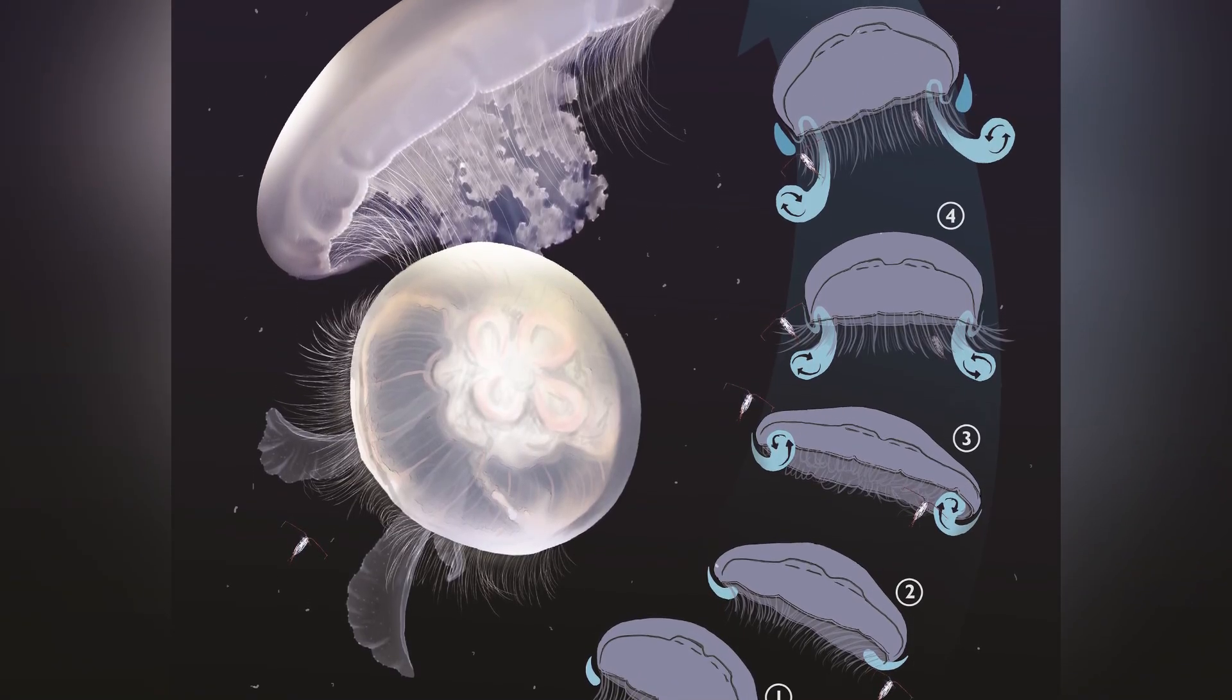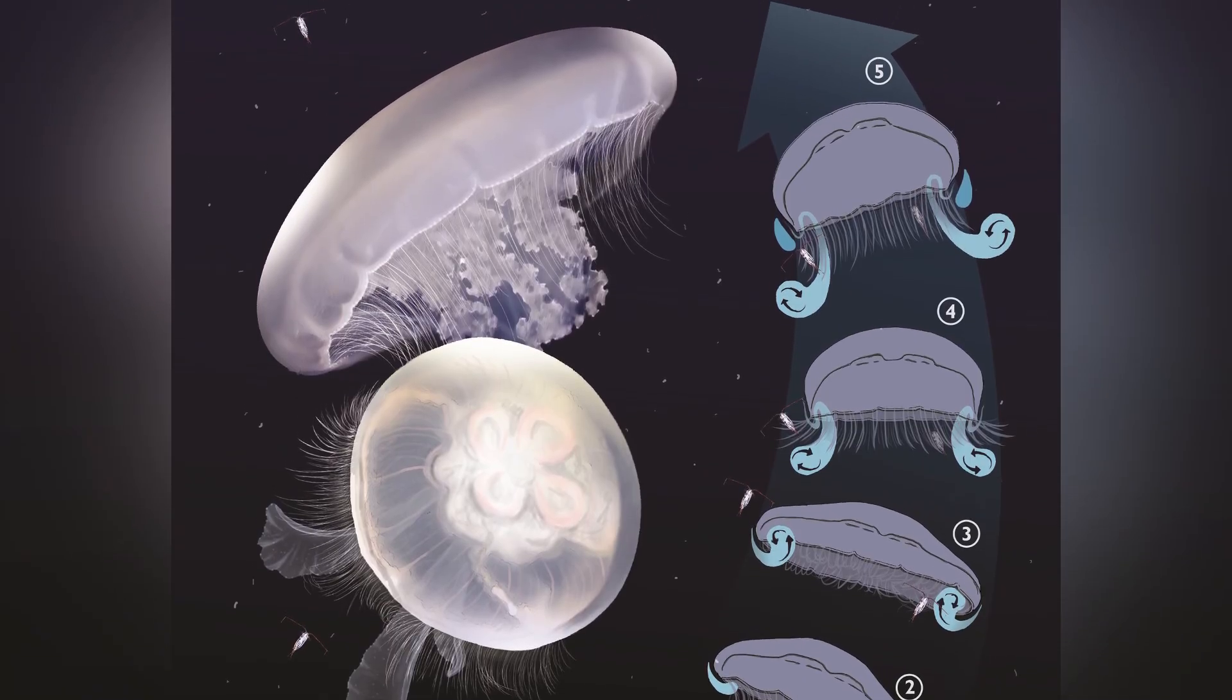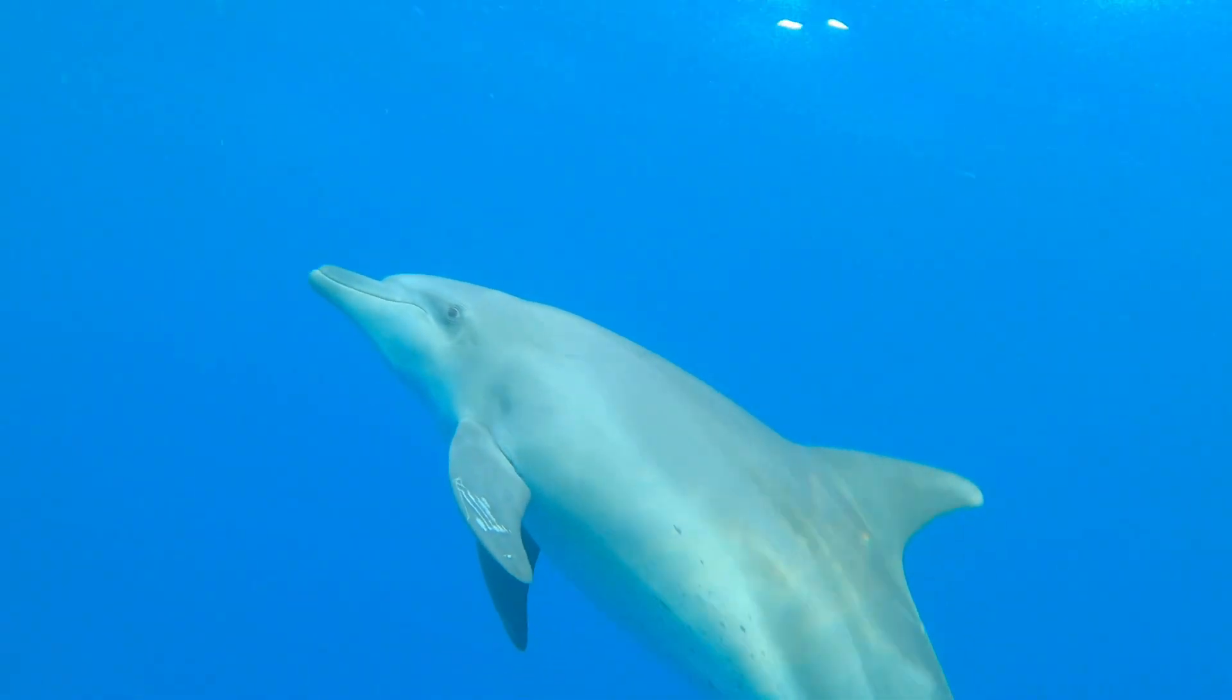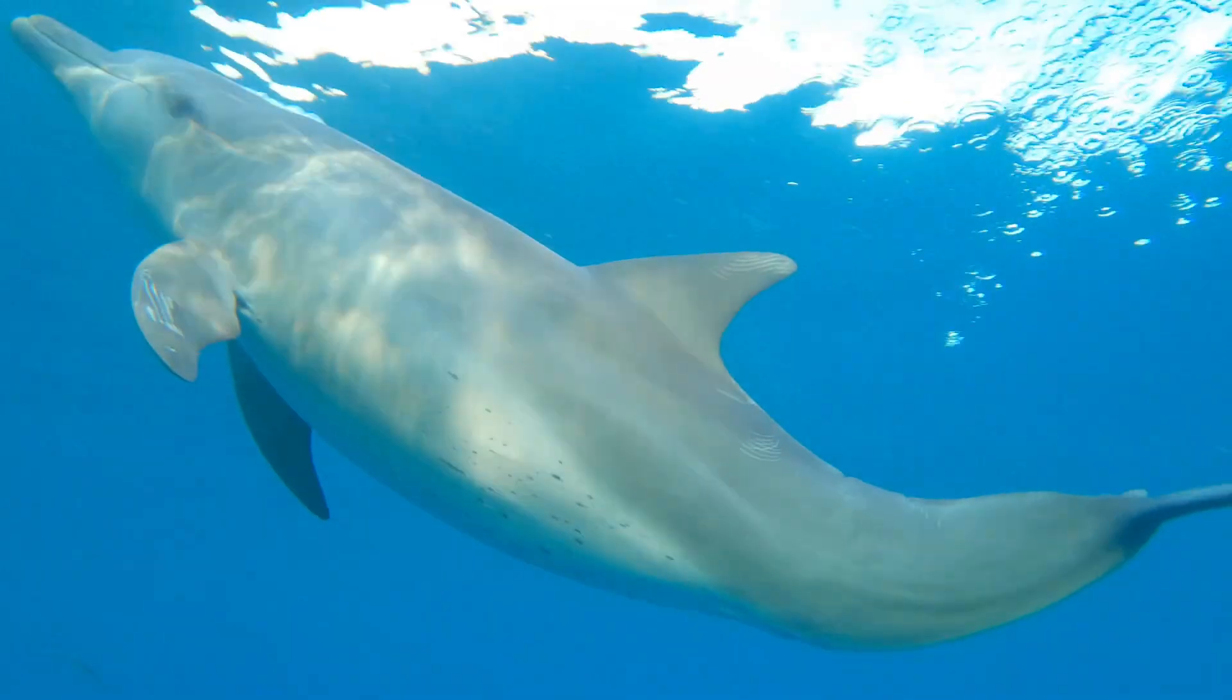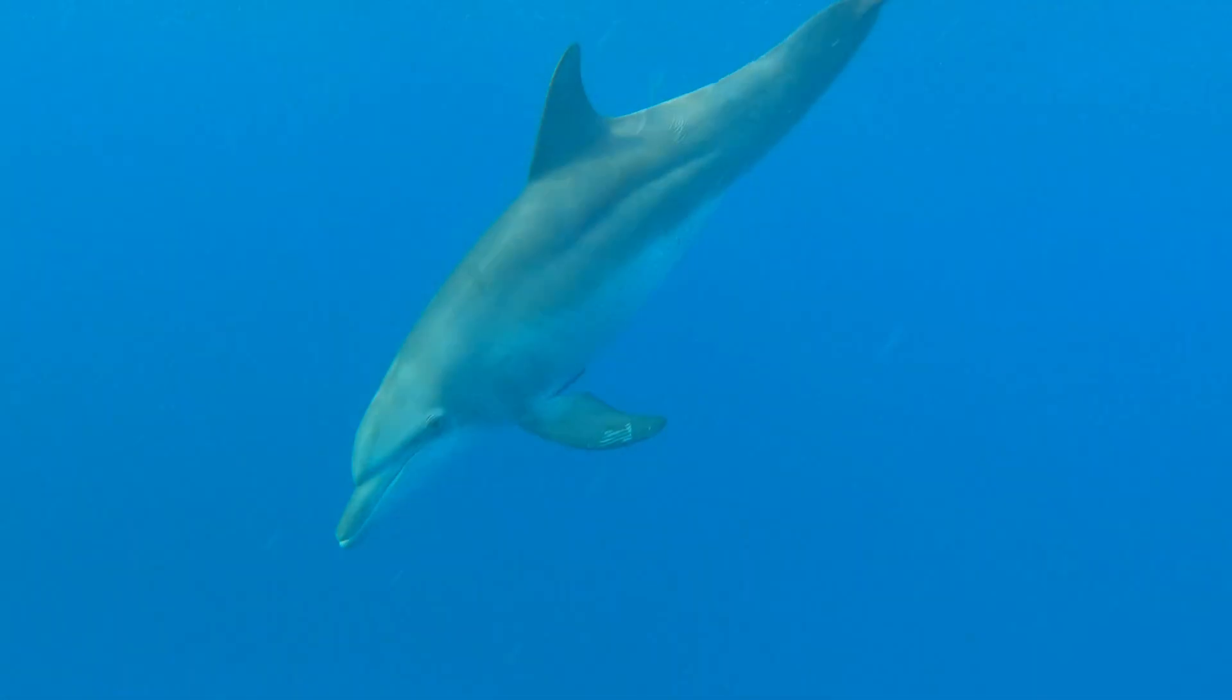It creates jet propulsion through its opening bell, and two vortex rings provide thrust to the center of the creature. Larger mammals, like dolphins, also capture this motion. Even though it's not as efficient, you can still capture this propulsion in larger forms and obtain higher velocities.